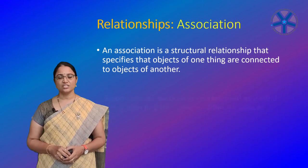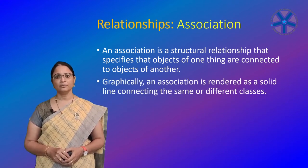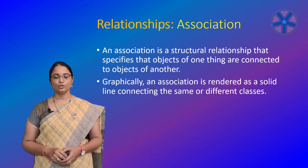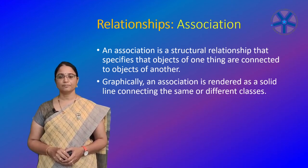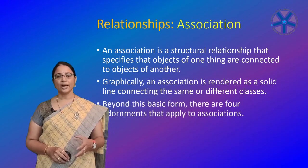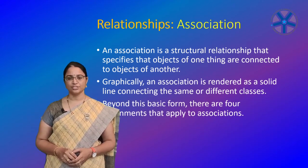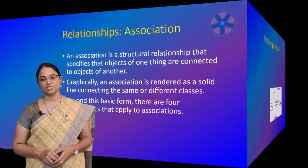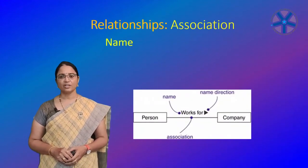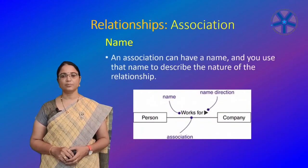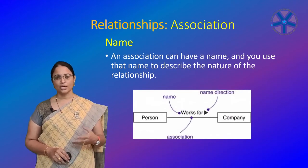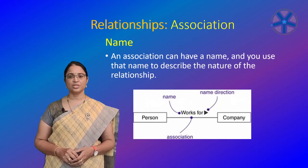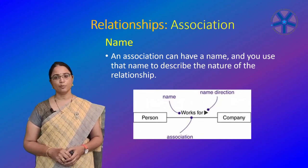Graphically, an association is rendered as a solid line connecting the same or different classes. Use associations when you want to show structural relationships. Beyond this basic form, there are four adornments that apply to an association. The first adornment is name: an association can have a name, and you use the name to describe the nature of the relationship.